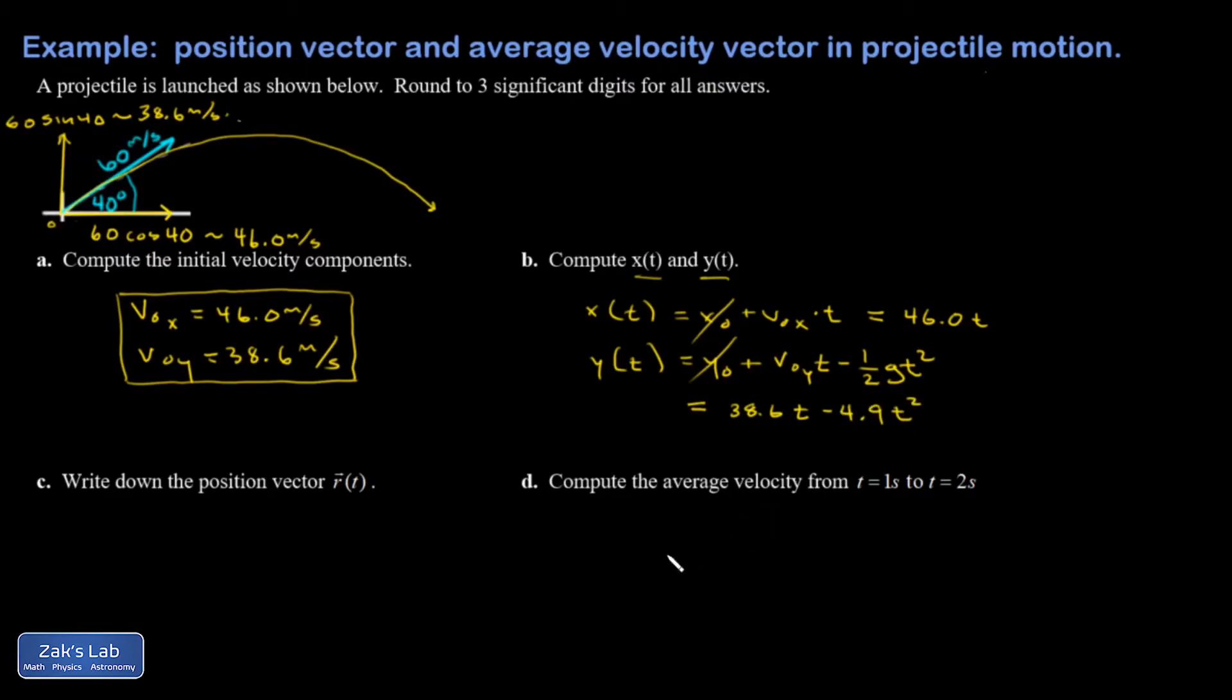All right, so these equations are telling you the x and y coordinate as a function of time for every single point on this flight. So these two components can be used to build the position vector, and the position vector is a vector that points from the origin to the location of the object at any moment in time. So here's two position vectors.